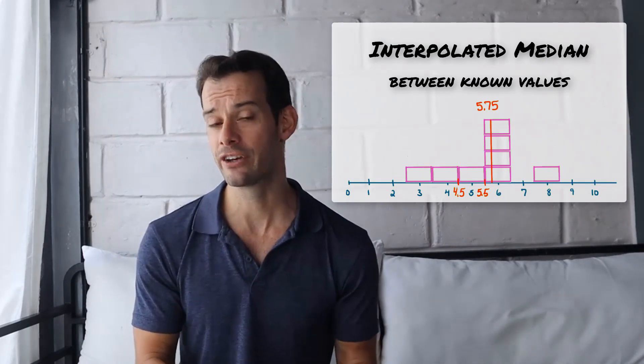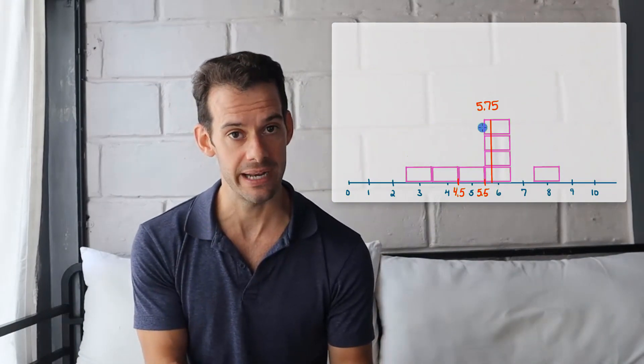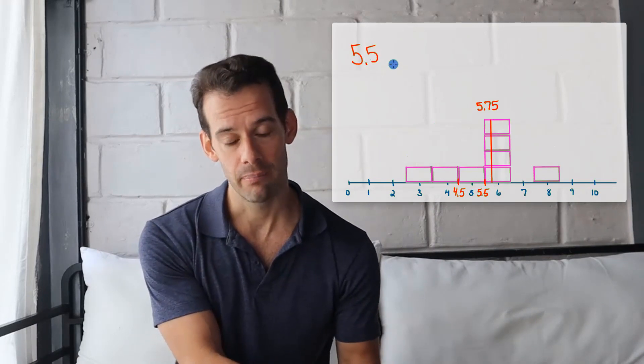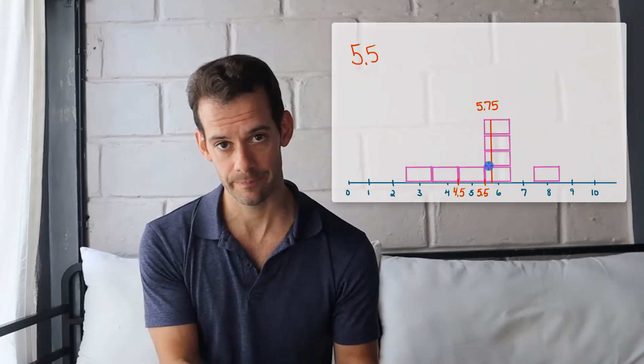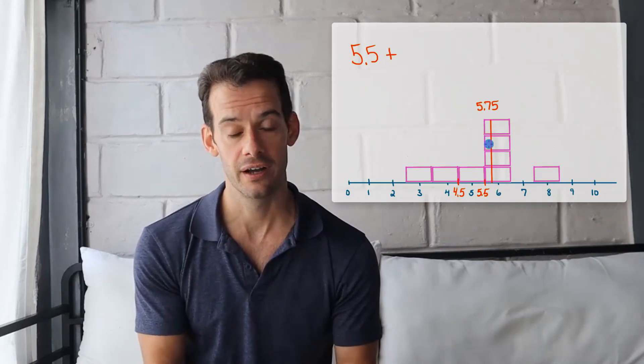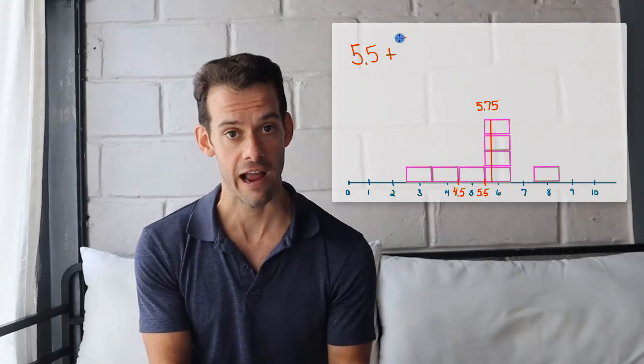So let's see if we can derive the formula based on what we've already done here. What we did was we started at the lower limit of our median, 5.5. We said okay, we know we're not at the median yet, but if we go all the way to 6 we've gone too far. So we know it's going to be at least 5.5 plus some fractional portion of these scores that are stacked up at 6.